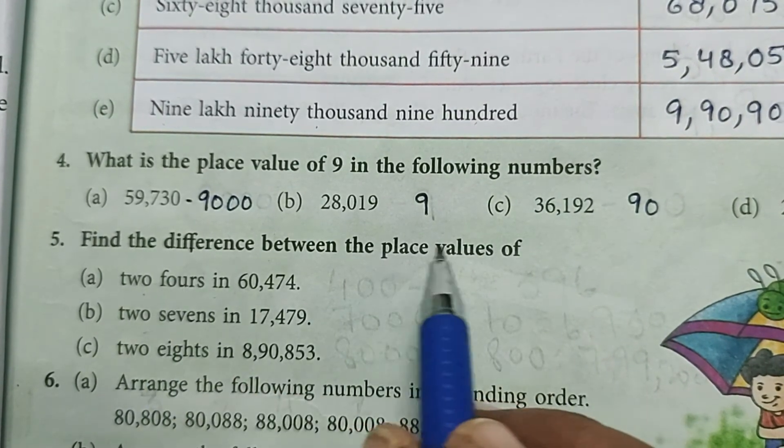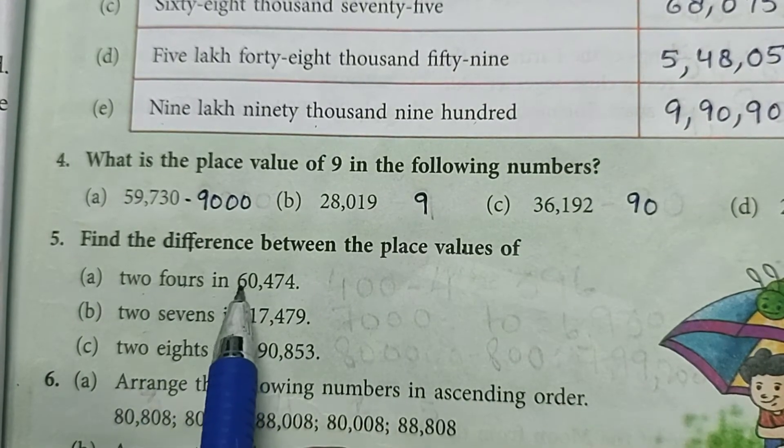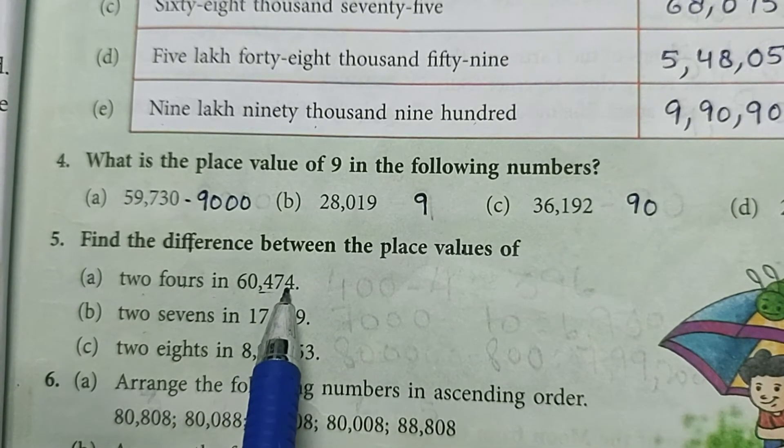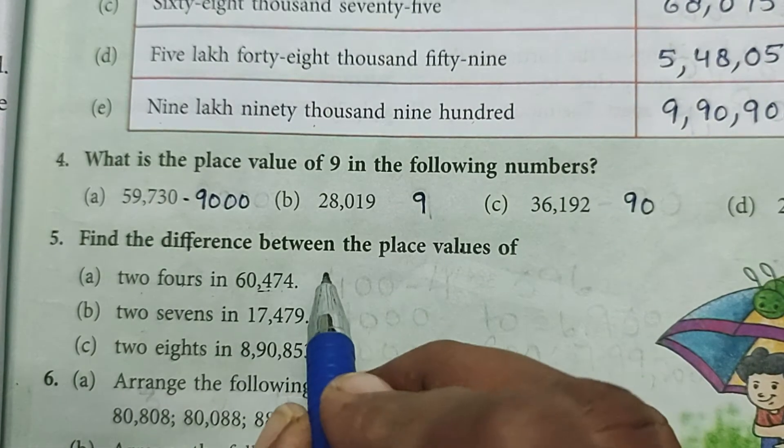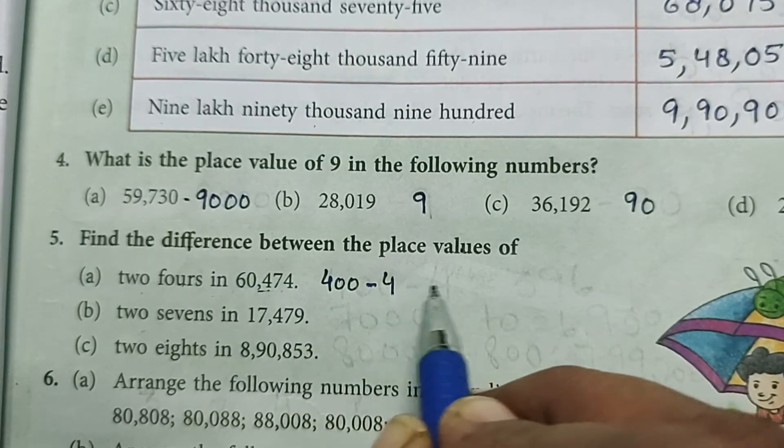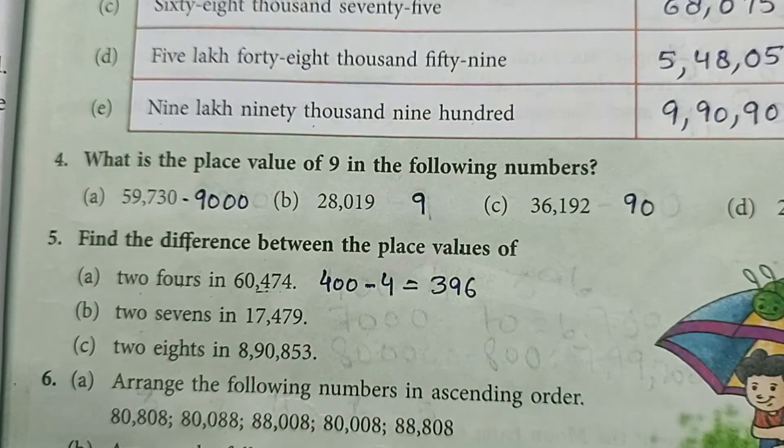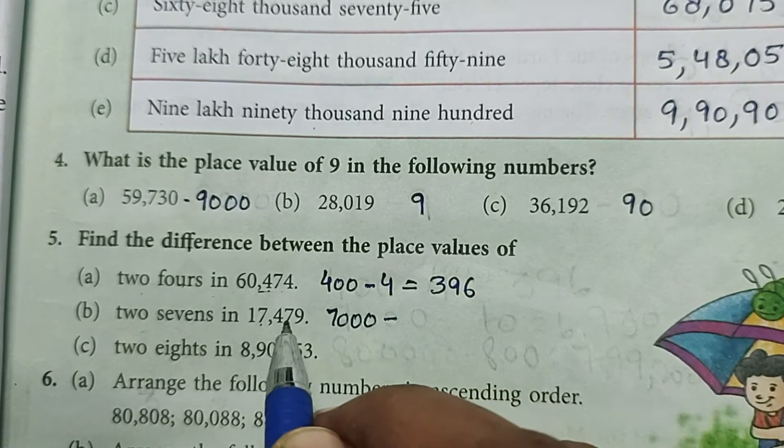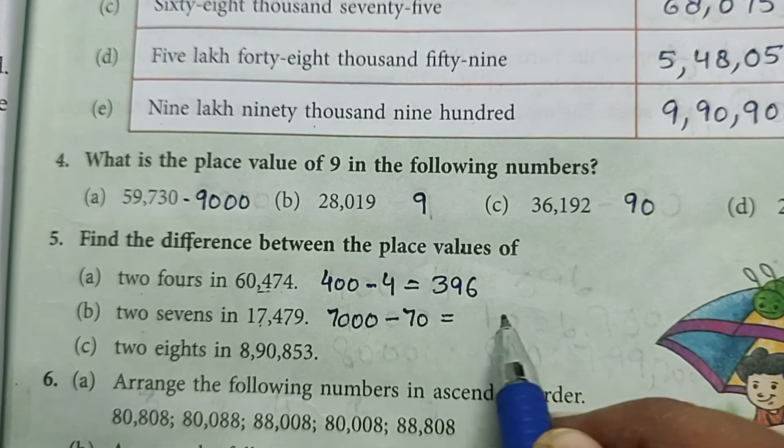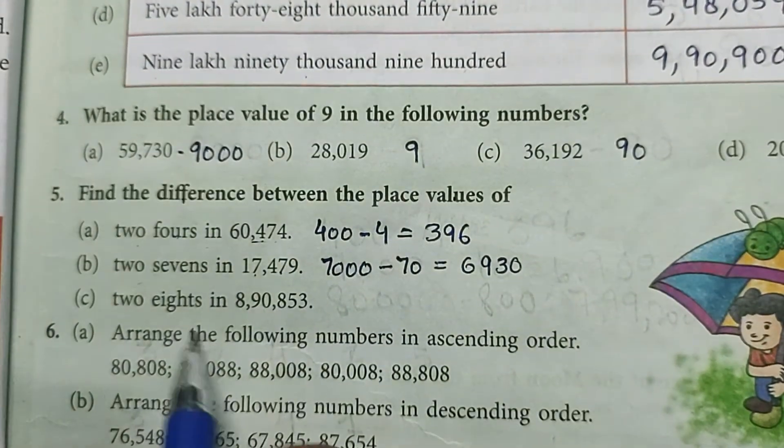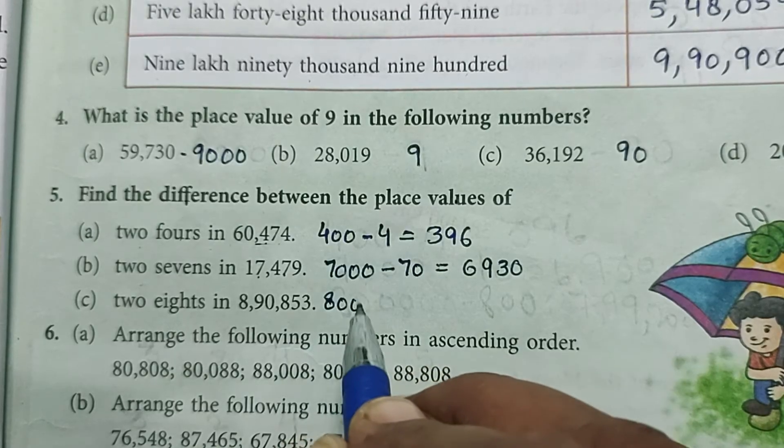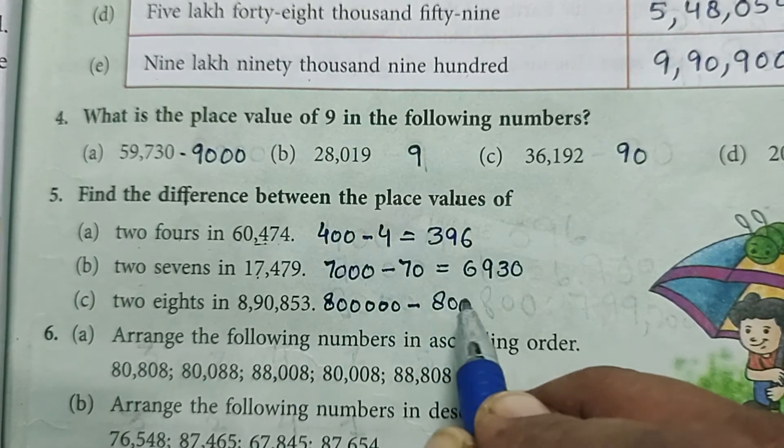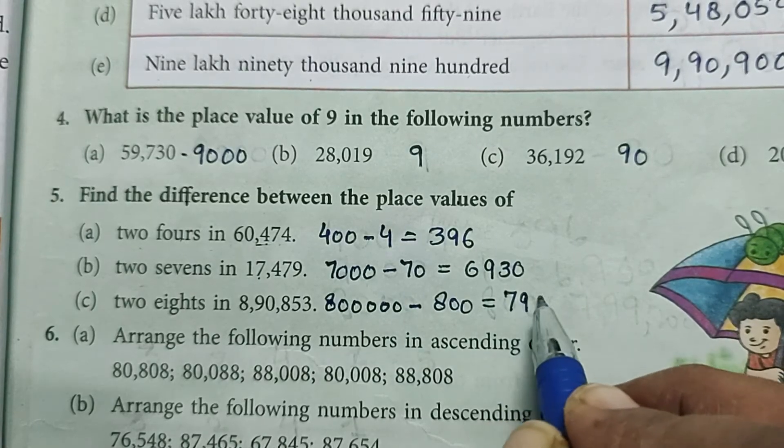Question number five: find the difference between the place values of two fours in 60,474. First four's place value is 400, second four is 4. The difference is 396. Two sevens in 17,179: 7000 minus 70 equals 6930. Two eights in 8,90,853: 8 lakh minus 800 equals 7,99,200.